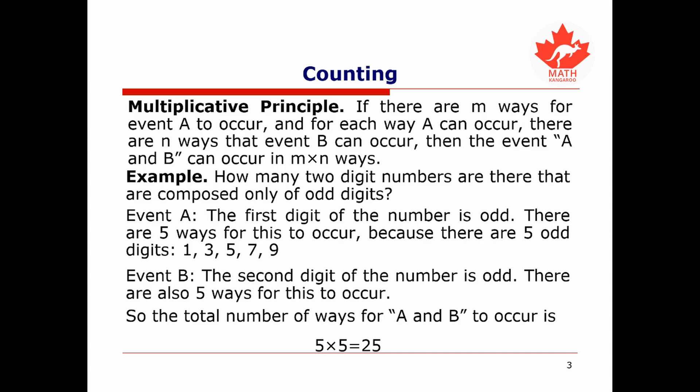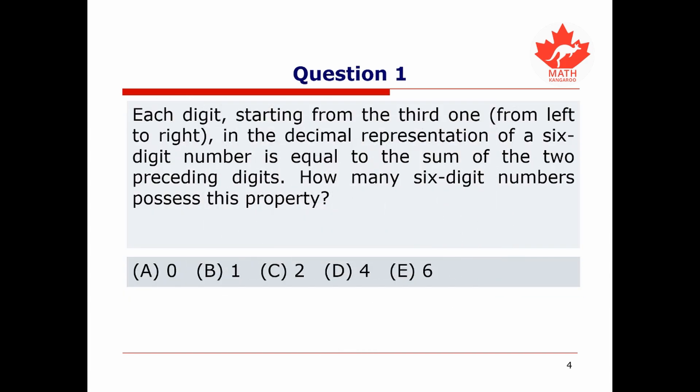So there are 25 different two-digit numbers composed only of odd digits. We're now ready for the first question.